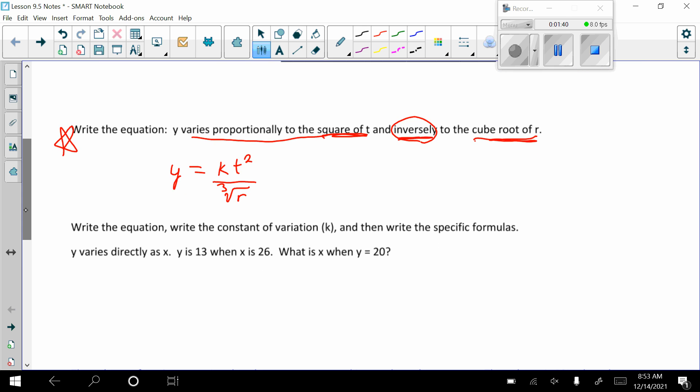Okay, let's go to the next equation. Write the equation, write the constant of variation K, and then write specific formulas. So we have Y varies directly as X. So that's like this top part. Y varies directly as X. So that's what I mean. Don't leave out that K.